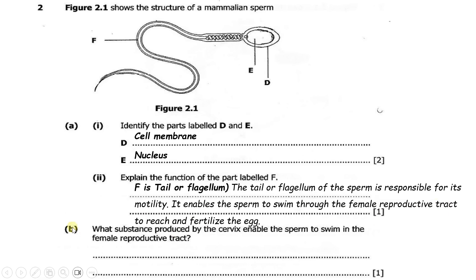Then B: what substance produced by the cervix enables the sperm to swim in the female reproductive tract? The substance produced can either be called the cervical fluid or cervical mucus.